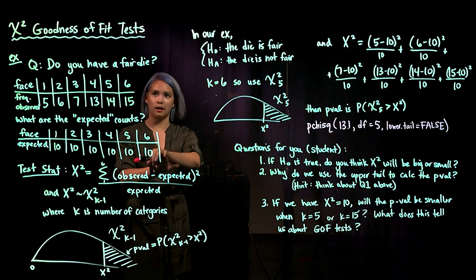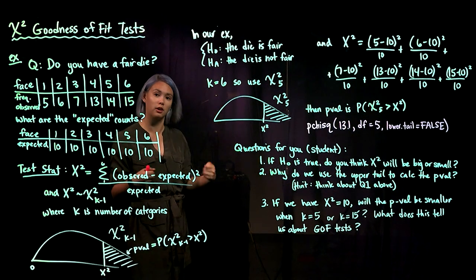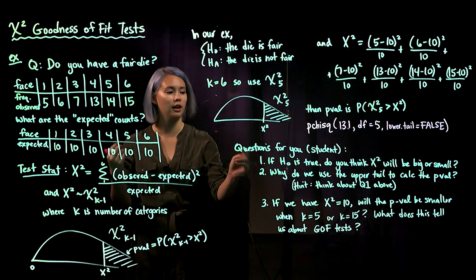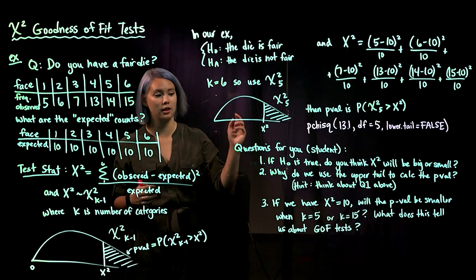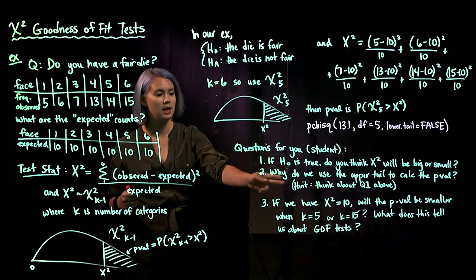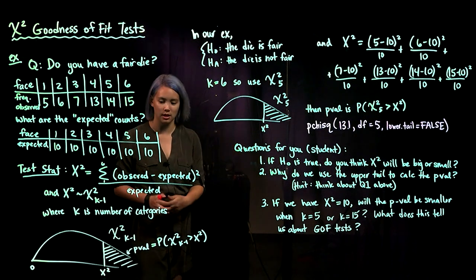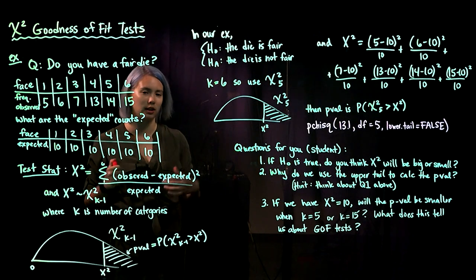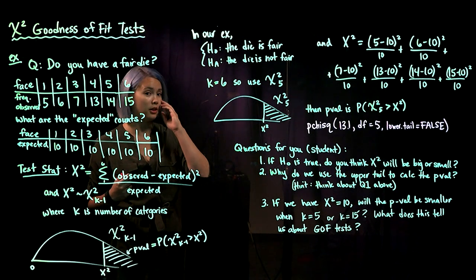Now for some review questions. First, if the null hypothesis is true — the die is fair — do you think x-squared, our test statistic, would be small or large? Then use that answer to think about why we use the upper tail rather than the lower tail to calculate the p-value. Recall that the p-value is the probability of seeing a test statistic as extreme or more extreme than observed, given that the null hypothesis is true.